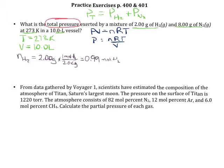We can do something similar for the moles of N₂. This time we have 8 grams. Based on the periodic table, a mole of N₂ weighs 28 grams — make sure you're doubling the atomic mass because it is diatomic. So that means we only have 0.286 moles of N₂.